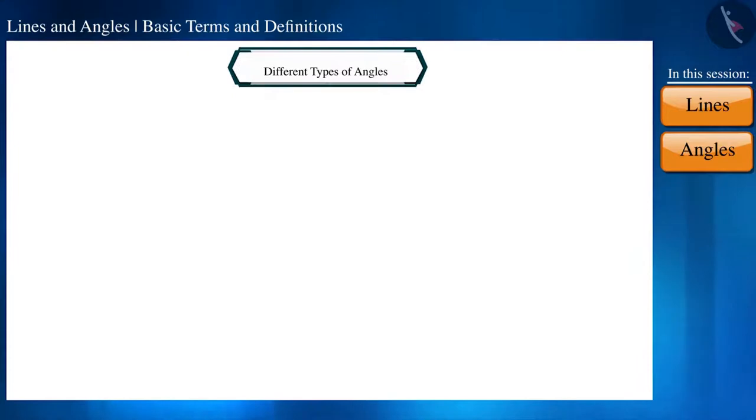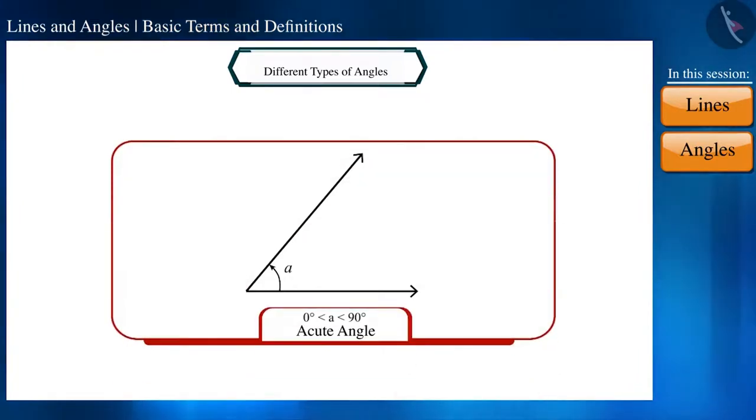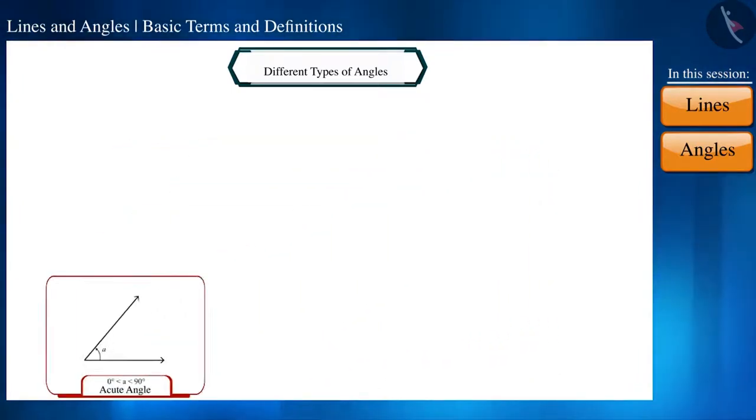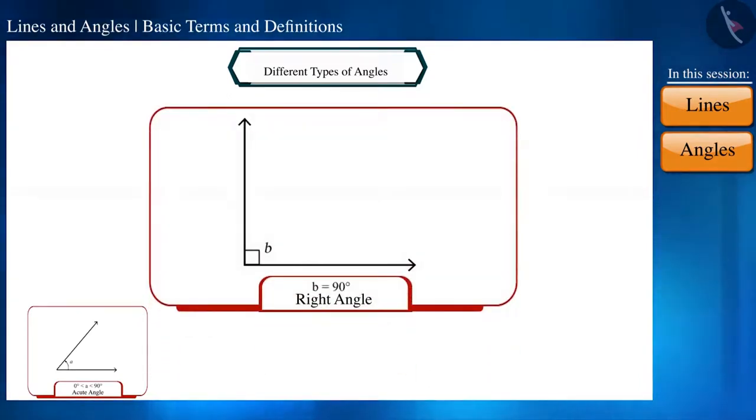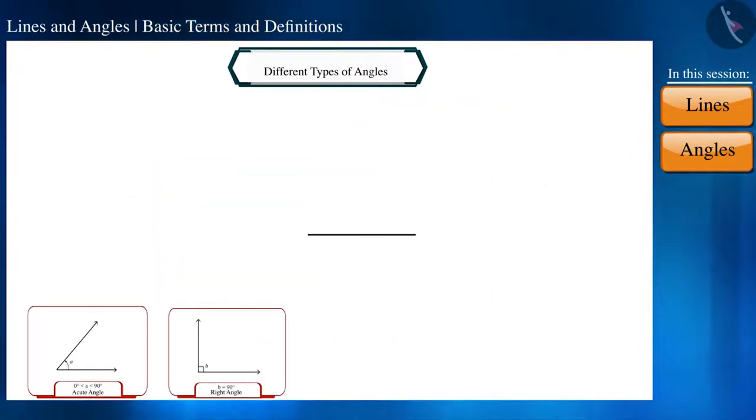Friends, in the previous classes we studied different types of angles. Let's repeat once. If the measure of an angle is between 0 degrees and 90 degrees, we call it an acute angle. If it's exactly 90 degrees, we call it a right angle. If it's more than 90 degrees but less than 180 degrees, we call it an obtuse angle.